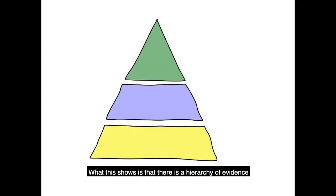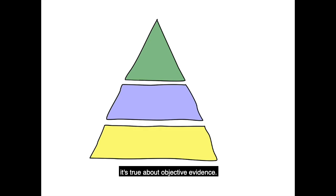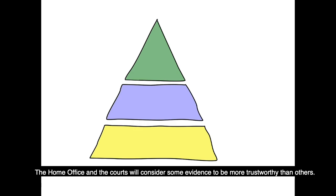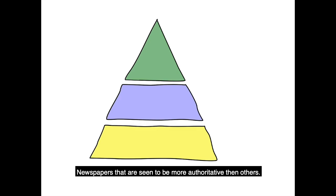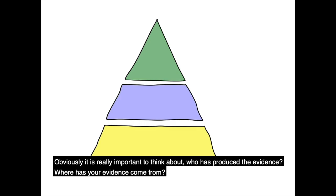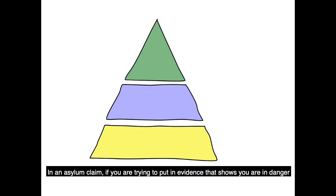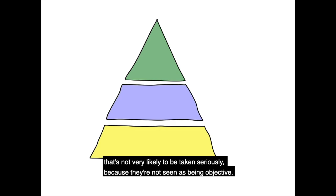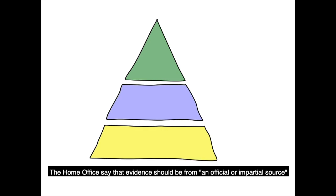What this shows is that there is a hierarchy of evidence — and this is true for evidence about your personal situation as well as objective evidence. The Home Office and the courts will consider some evidence to be more trustworthy than others. Some newspapers are seen as more authoritative than others. It's really important to think about who has produced the evidence and where it came from. In an asylum claim, if you're providing evidence from an opposition group's newspaper to show danger from the government, it's not likely to be taken seriously because it's not seen as objective. The Home Office say the evidence should be from an official or impartial source.